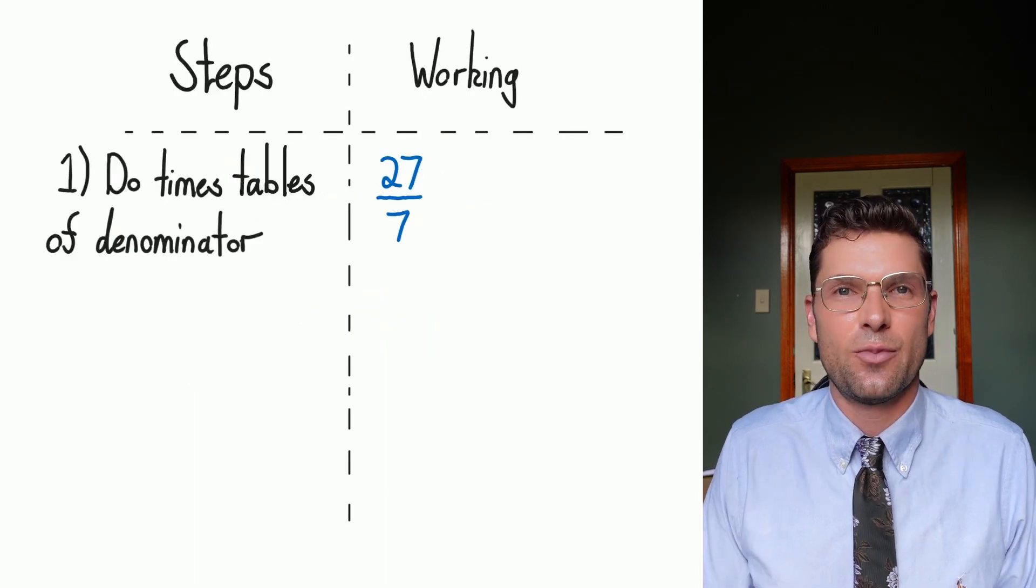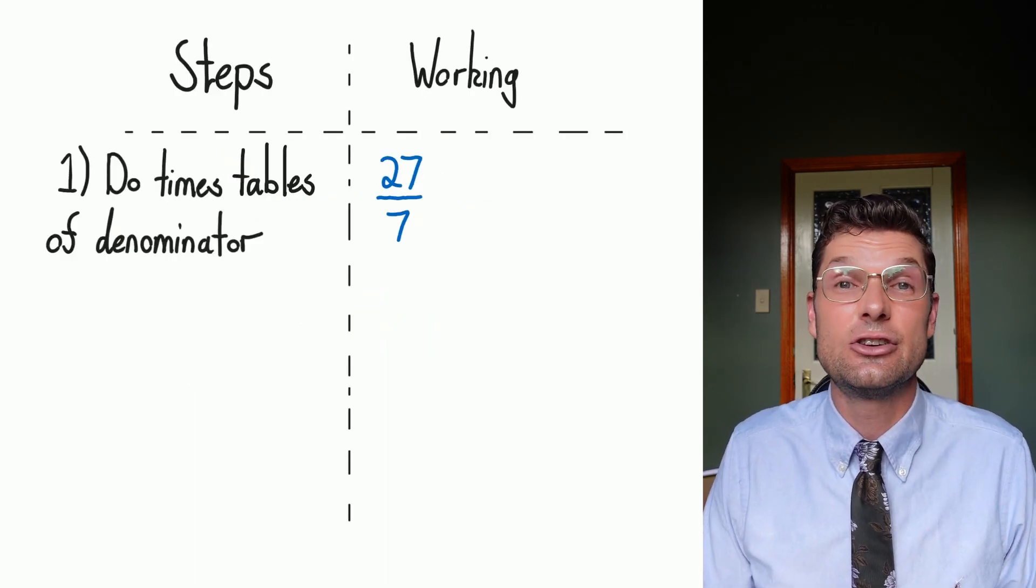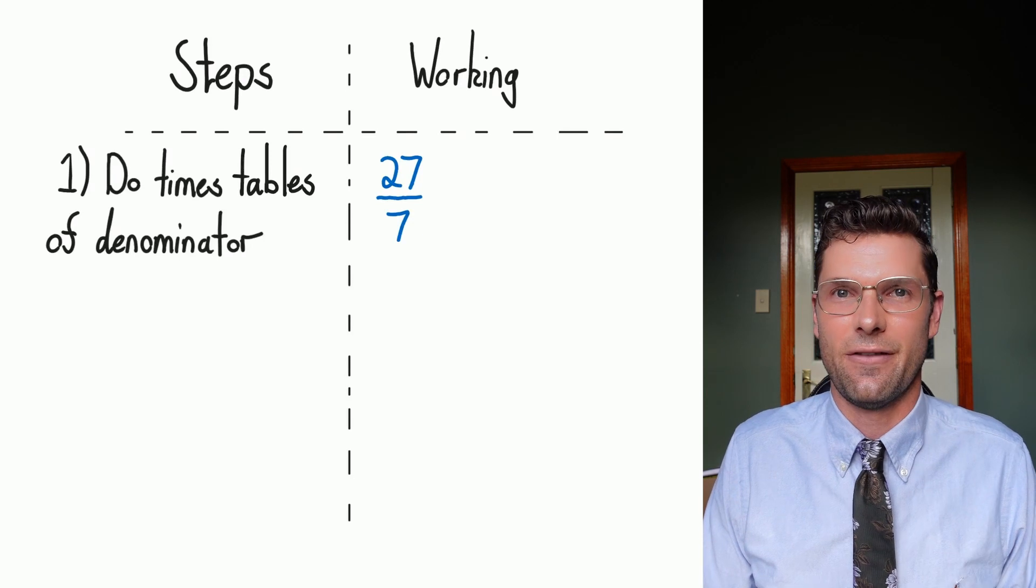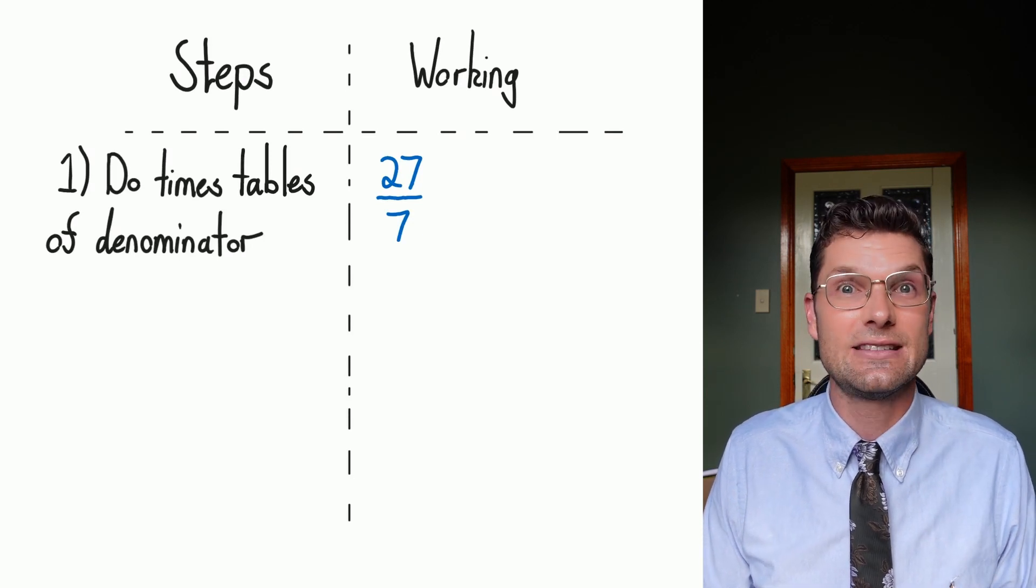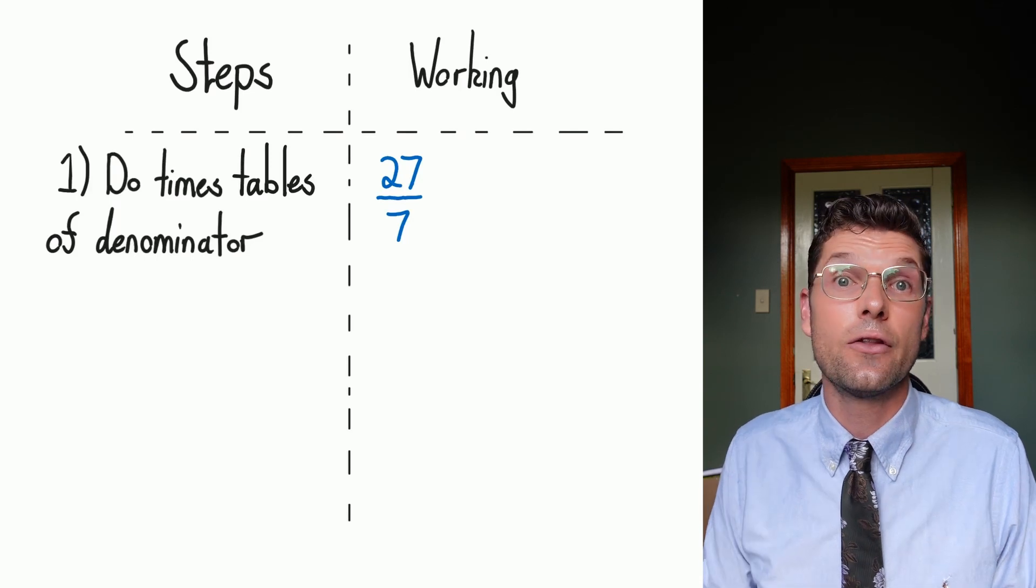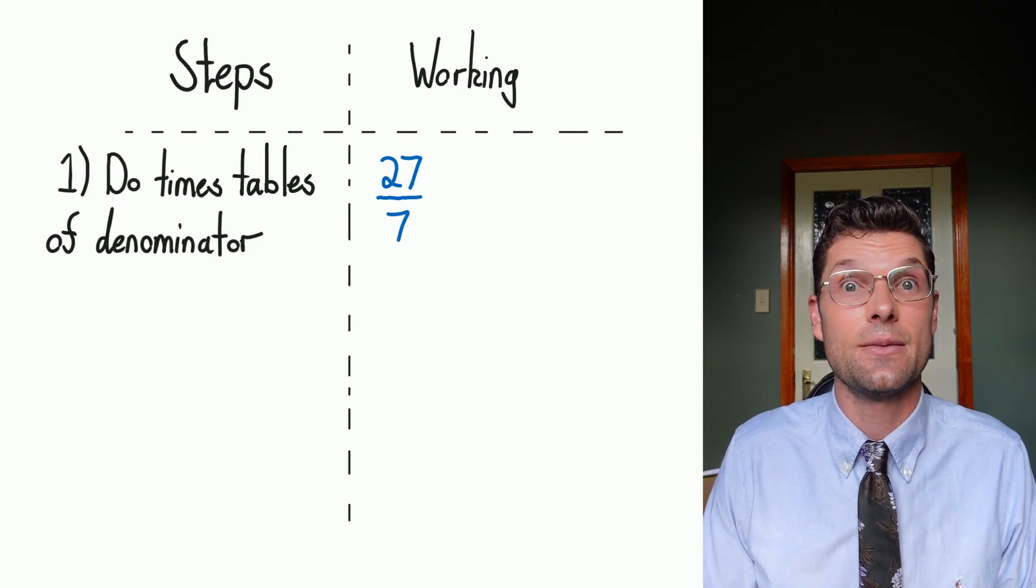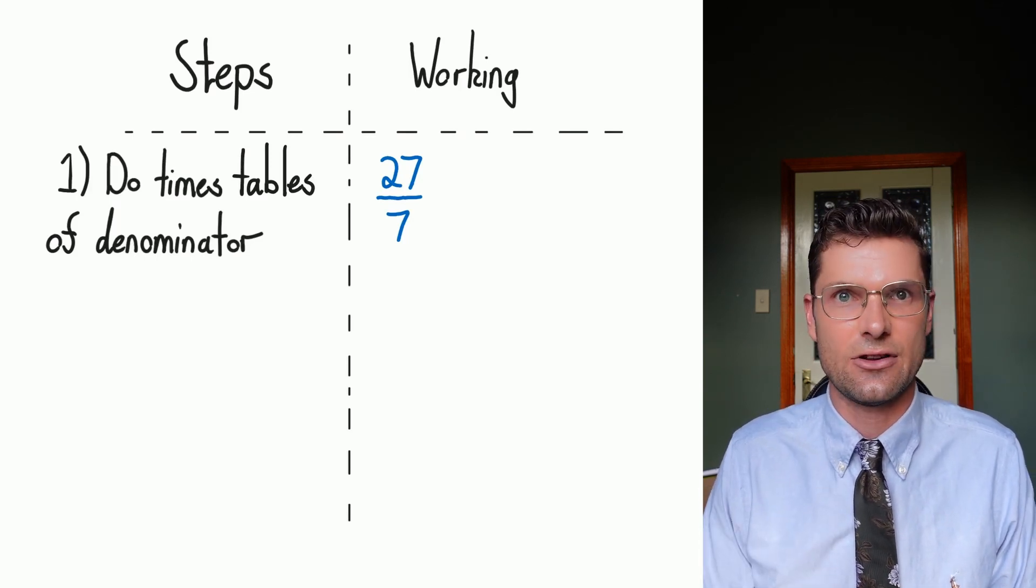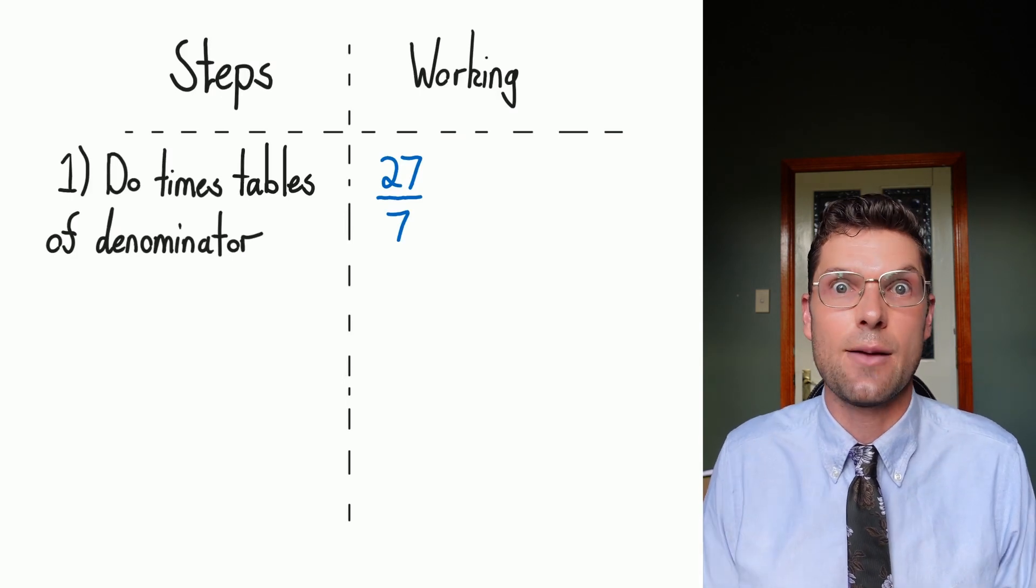So we don't wanna think about sports teams every single time. So we do wanna learn the steps to do this a little bit faster. So this example, I've got 27 over seven, and I wanna convert it into a mixed numeral. The first thing we're gonna do is see how many times does seven fit into 27?